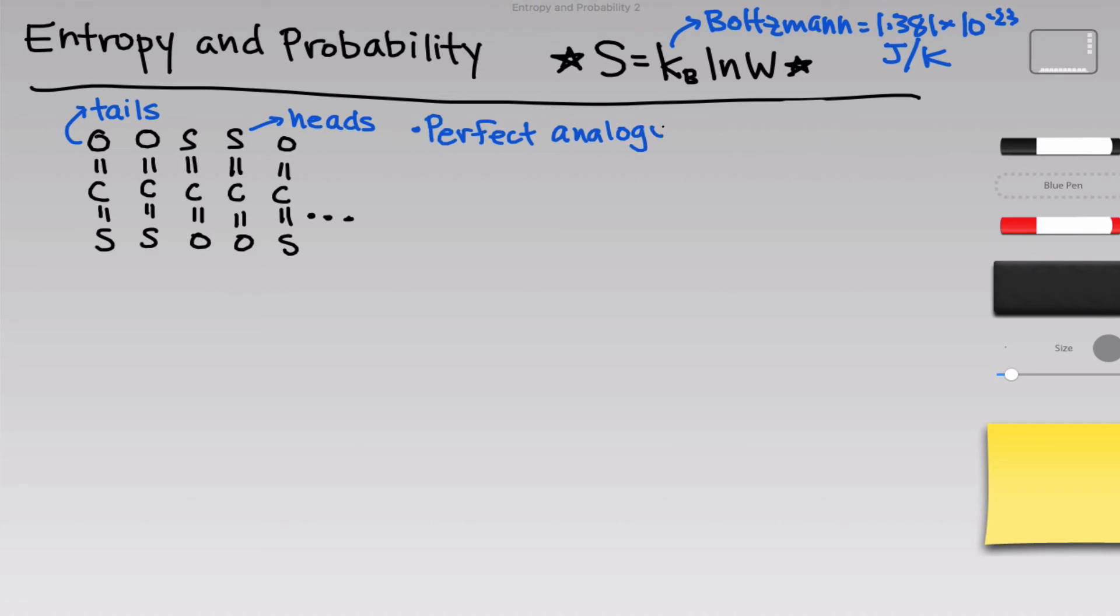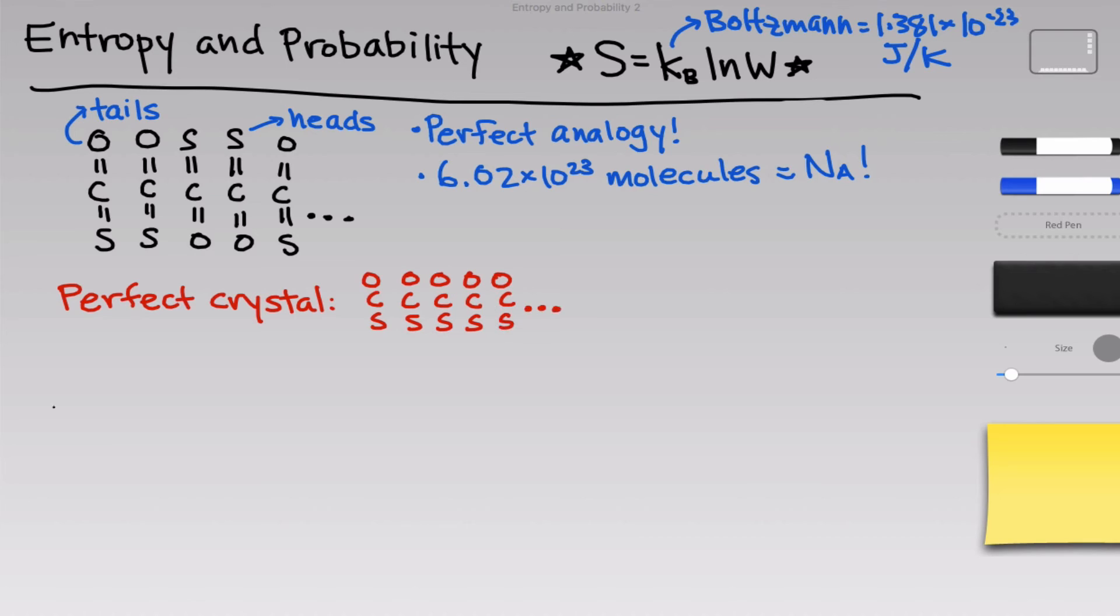Instead of looking at six molecules, I want to look now at a mole of COS and talk about the difference in entropy between the perfect crystal in which all of the molecules are aligned the same way, and the completely random crystal in which we don't know whether oxygen is pointing up or sulfur is pointing up. You probably have an idea intuitively of which situation has a higher entropy, but we're going to use Boltzmann's equation to show that the perfect crystal and the random state differ in entropy.